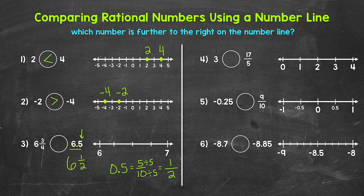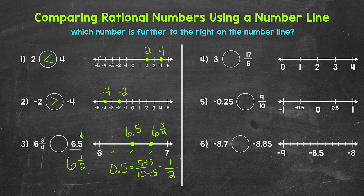Now, as far as the number line, both of these numbers are between six and seven. Starting with six and three-fourths: six and one-fourth, six and two-fourths (which is six and a half), and then six and three-fourths — so six and three-fourths is right here. Then six and five-tenths, which is six and a half, is right here. We can see that six and three-fourths is further to the right on the number line, therefore greater in value. So six and three-fourths is greater than six and five-tenths.